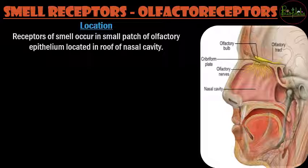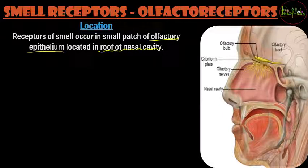The windows of the body are nothing but the receptors, which are going to sense the external environment. The first major receptor we are going to study is the olfactory receptor, also known as the smell receptor. The location where smell reception occurs is in the nose — specifically in the olfactory epithelium, which is located at the roof of the nasal cavity.